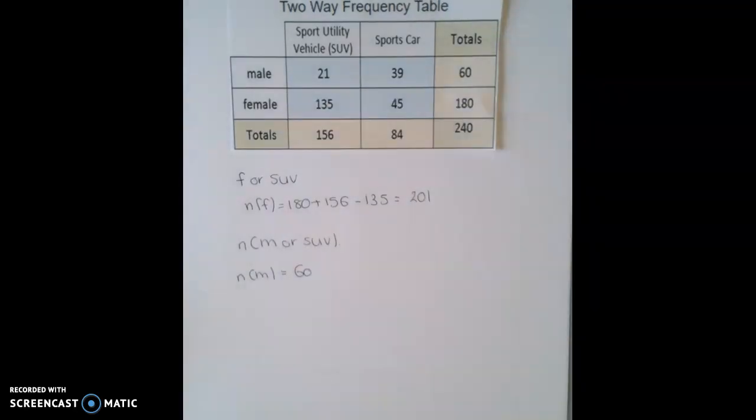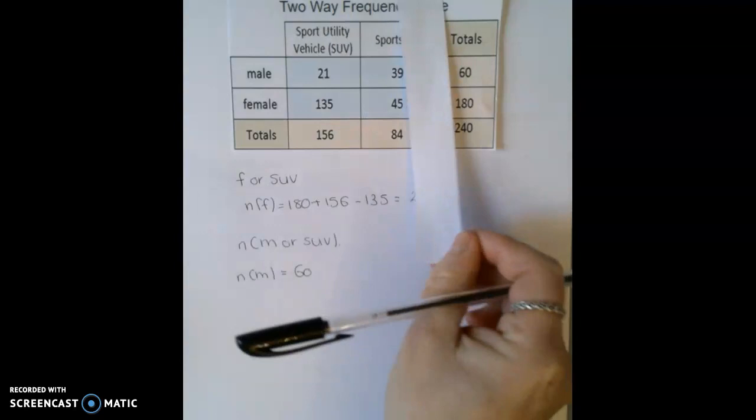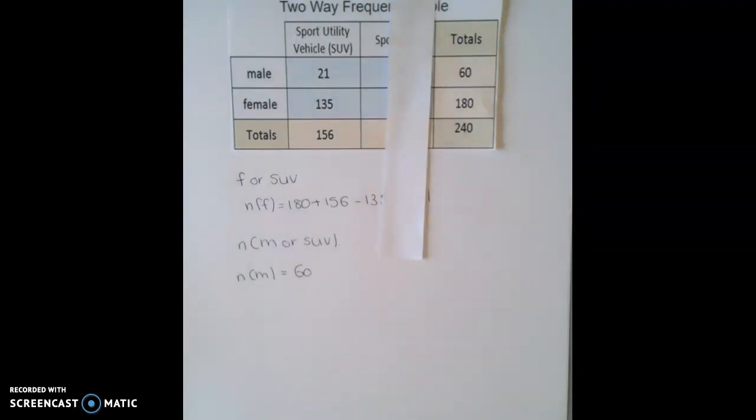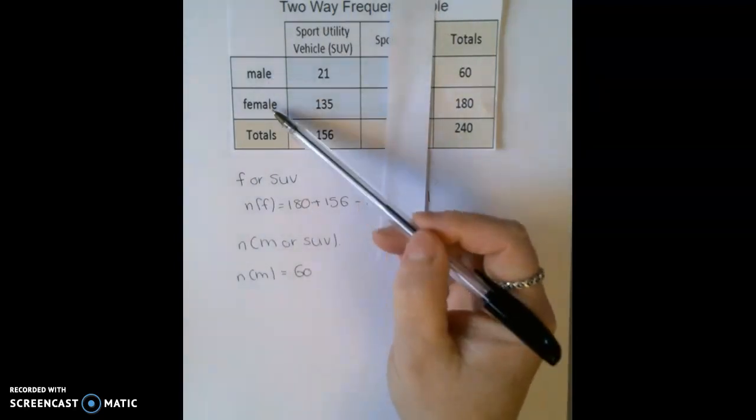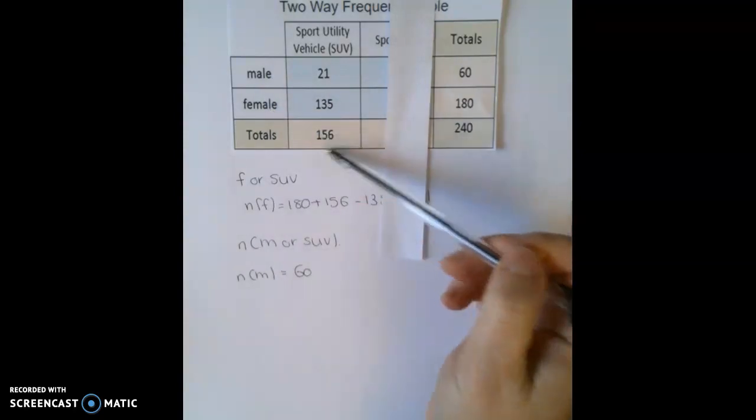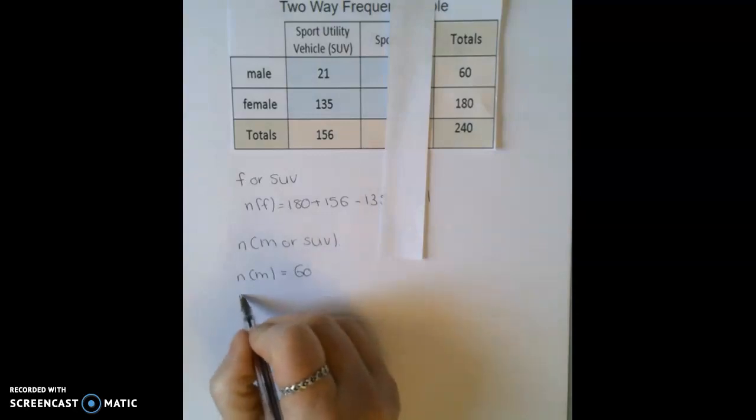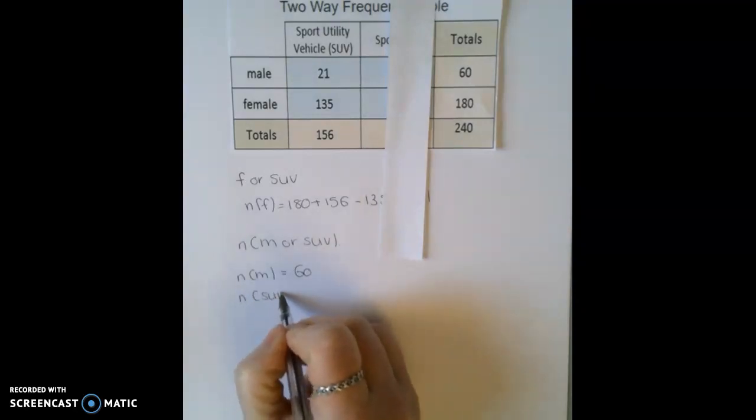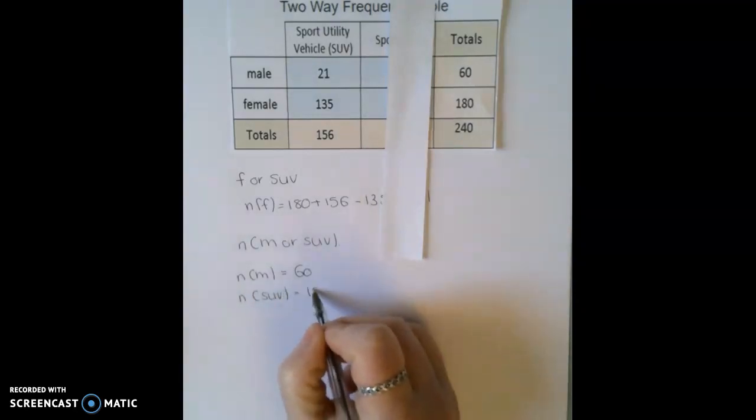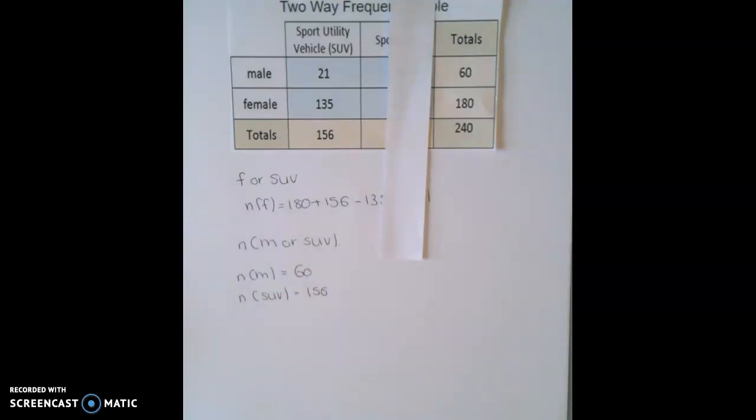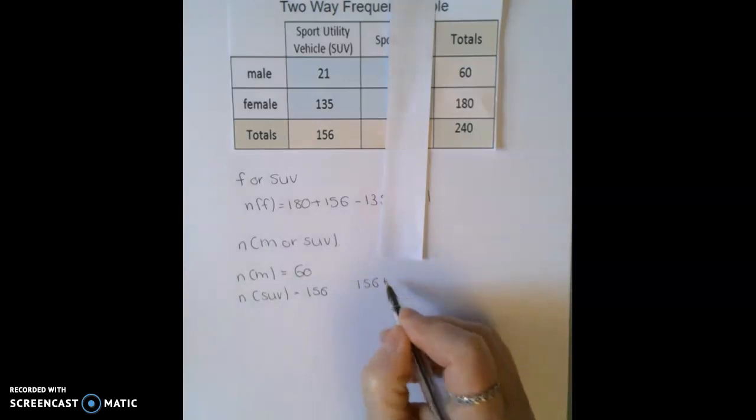And then again, the number of people who picked an SUV would be in that column there. So again, it doesn't matter if they were male or if they're female. We just want to know how many people picked the SUV. So that would be 156. Add the 60.